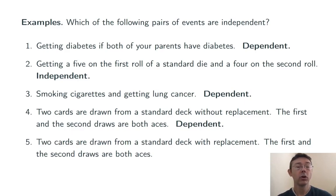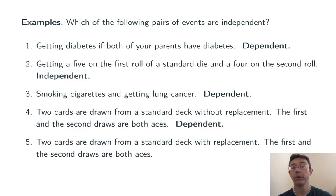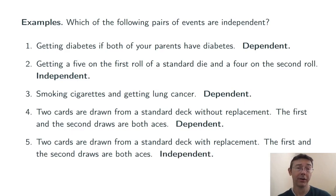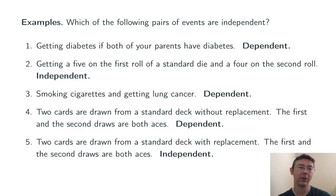Final example: two cards are drawn from a standard deck with replacement. We take a card out of the deck, look at it, put it back, shuffle, and then draw another. In this case, the events that the first draw is an ace and the second draw is an ace are independent. The outcome of the first gives you no information about the outcome of the second.